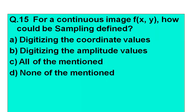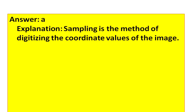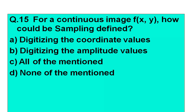Question number 15: For a continuous image f(x,y), how could sampling be defined? Option A: digitizing the coordinate values. Option B: digitizing the amplitude values. Option C: all of the mentioned. Option D: none of the mentioned. The answer is option A — sampling is the method of digitizing the coordinate values of the image.